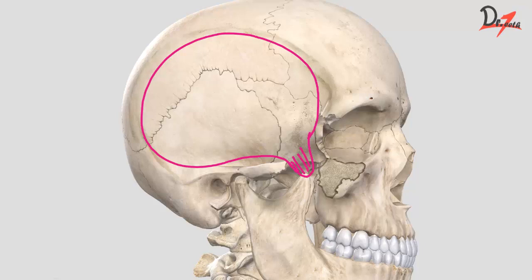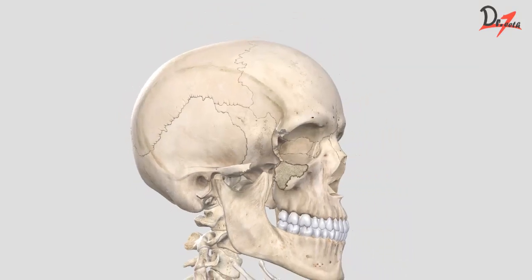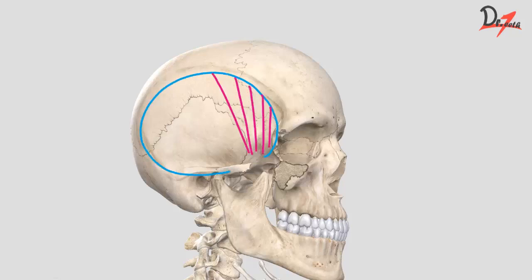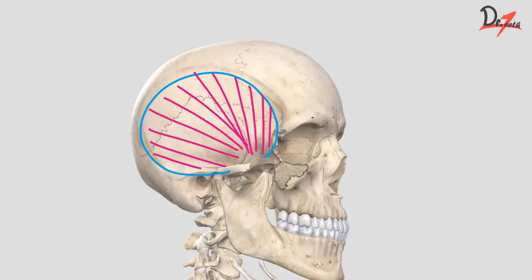The zygomatic arch was above the temporalis and the muscle structure was below it. As for the actions: the anterior and middle fibers elevate the mandible to occlude the teeth, and the posterior fibers retract the mandible after protrusion. That was about the temporalis muscle.